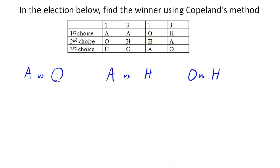So when we compare A to O, we look at each voter - do they prefer A or O? This voter prefers A, this one prefers A, this one prefers O, this one prefers A. It doesn't matter that it's not their first choice. We can still tell from the preference schedule that these people prefer A over O. So we have 7 people preferring A, 3 people preferring O.